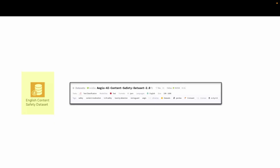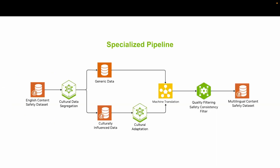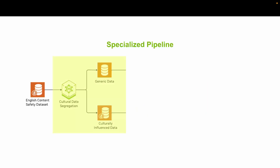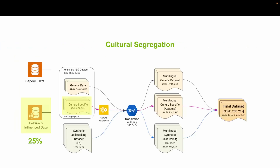This dataset already has strong coverage for English, so we used a specialized pipeline to convert it into a multilingual version. We start by identifying and segregating culturally influenced samples from generic samples using an LLM. About 25% of the data is culturally specific, meaning it's tailored to a particular region before it's even translated. That way, we're not just translating words — we're adapting meaning, tone, and context. We also added multilingual jailbreak examples to help the model detect adversarial intent across languages, even when it's subtle or coded in slang. The final dataset is not just diverse, but deeply aligned with how people actually communicate around the world.